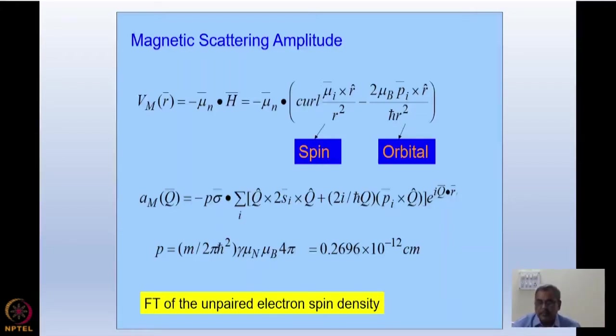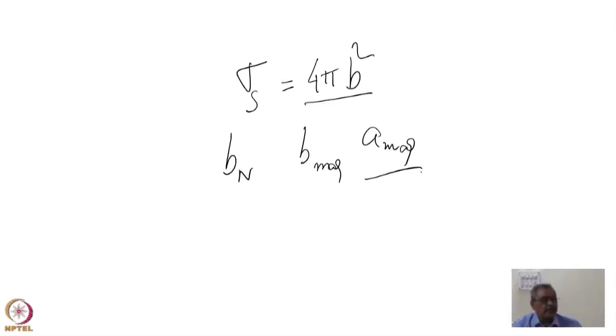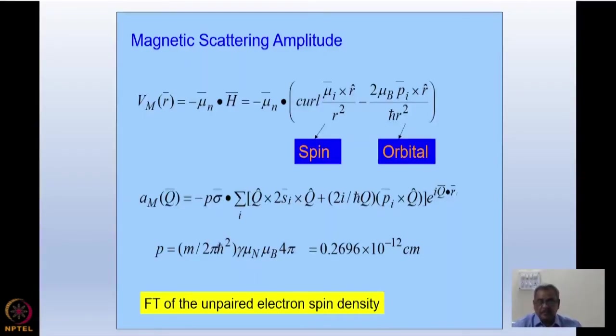I will just give you the expressions because derivations will be out of scope at the moment. So ultimately I can define magnetic scattering length when there is a scattering length. I must tell you that sigma of any scattering cross section is given by 4π into scattering length square. So this B can be nuclear or B can be magnetic. There I wrote as A magnetic. So I can define a scattering length associated with the magnetic scattering given here which is actually in terms of centimeter of the order of 10^-12 centimeter. This is the mu_n of the neutron and mu_B is a Bohr magneton.